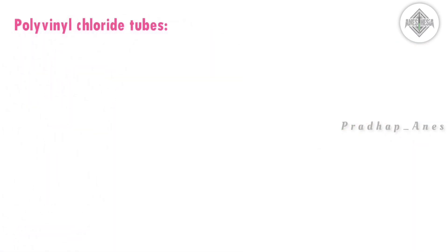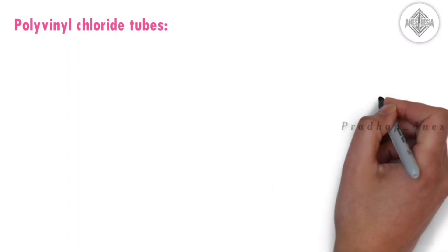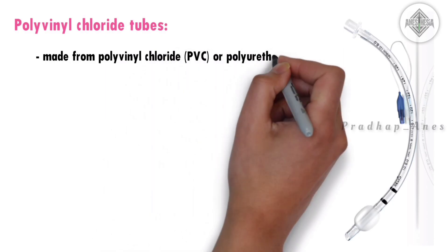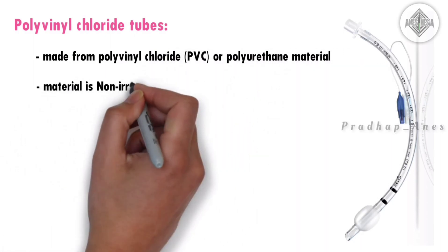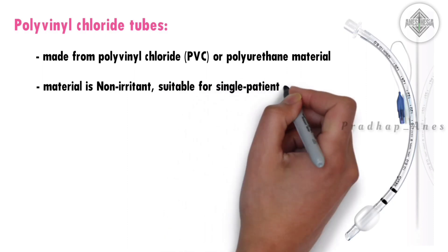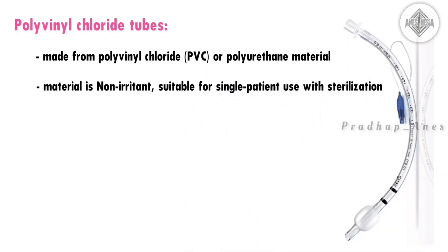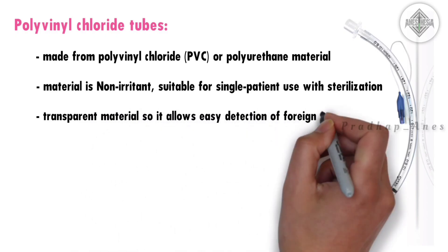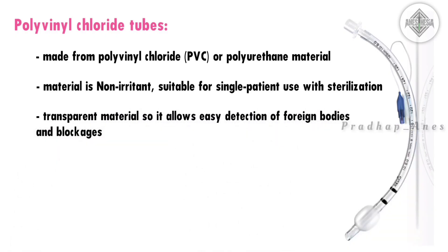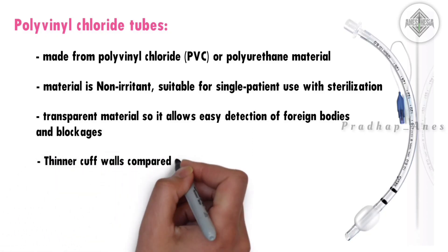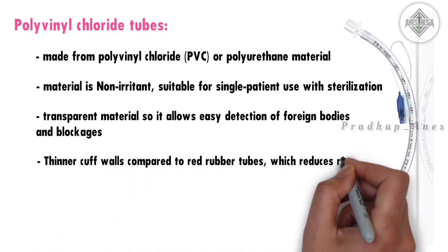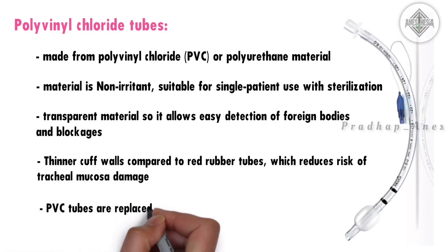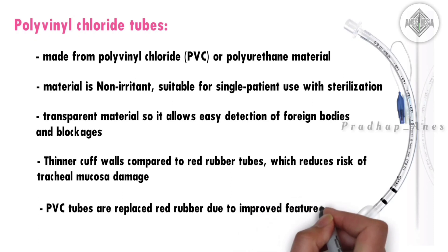PVC tubes are made from polyvinyl chloride or polyurethane material. This material is non-irritant and suitable for single patient use with sterilization. It is transparent, allowing easy detection of foreign bodies and blockages. PVC tubes have thinner cuff walls compared to red rubber tubes, which reduces the risk of tracheal mucosa damage. PVC tubes have replaced red rubber due to their improved features.